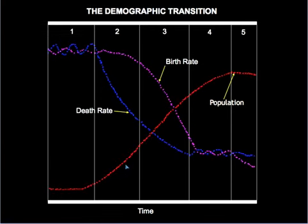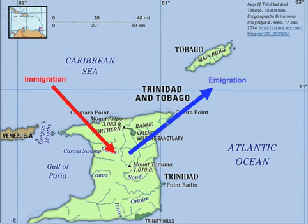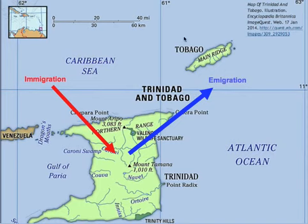Having gone through the exponential growth section of the demographic transition, the overall population growth of this country was not as significant as we might have expected. One reason for this is large amounts of emigration for jobs and a better quality of life in places like Europe and North America. But today, as the quality of life improves, Trinidad is seeing a new flood of immigrants and the balance is beginning to shift.